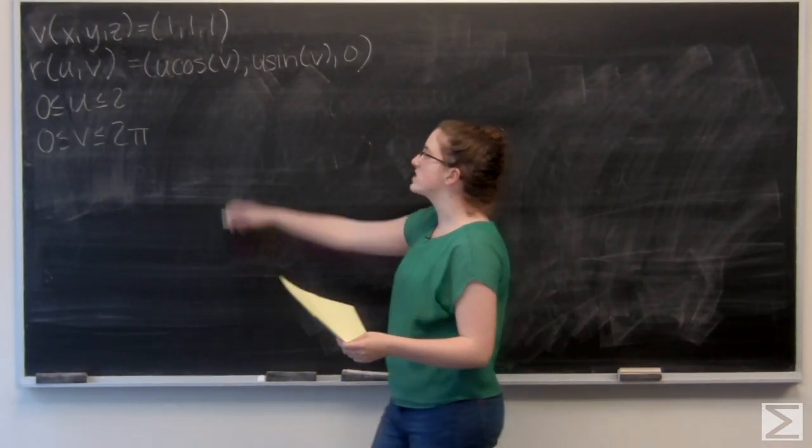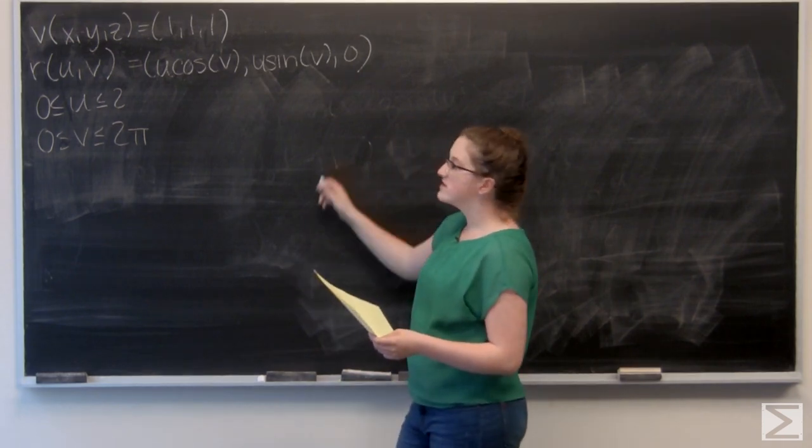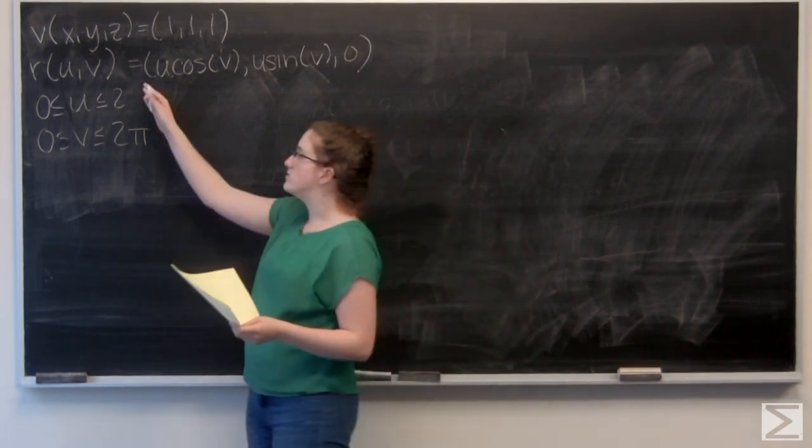So, for this problem, I'm given a constant vector field v of x, y, and z, and a parameterized surface M given by r of u and v.